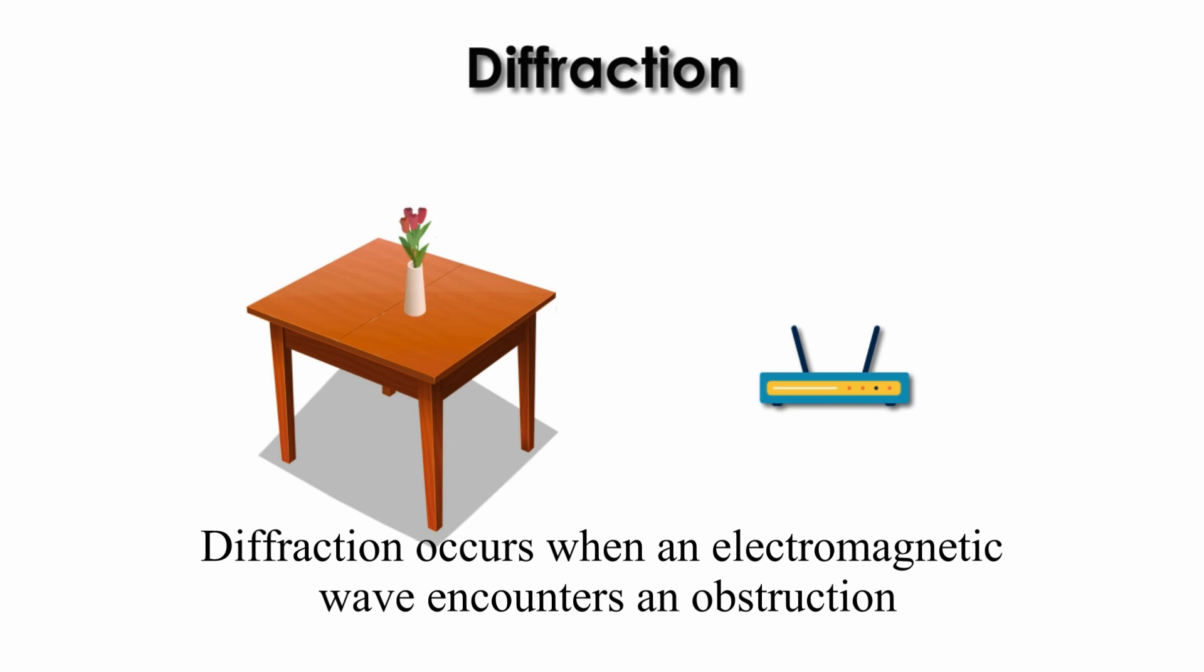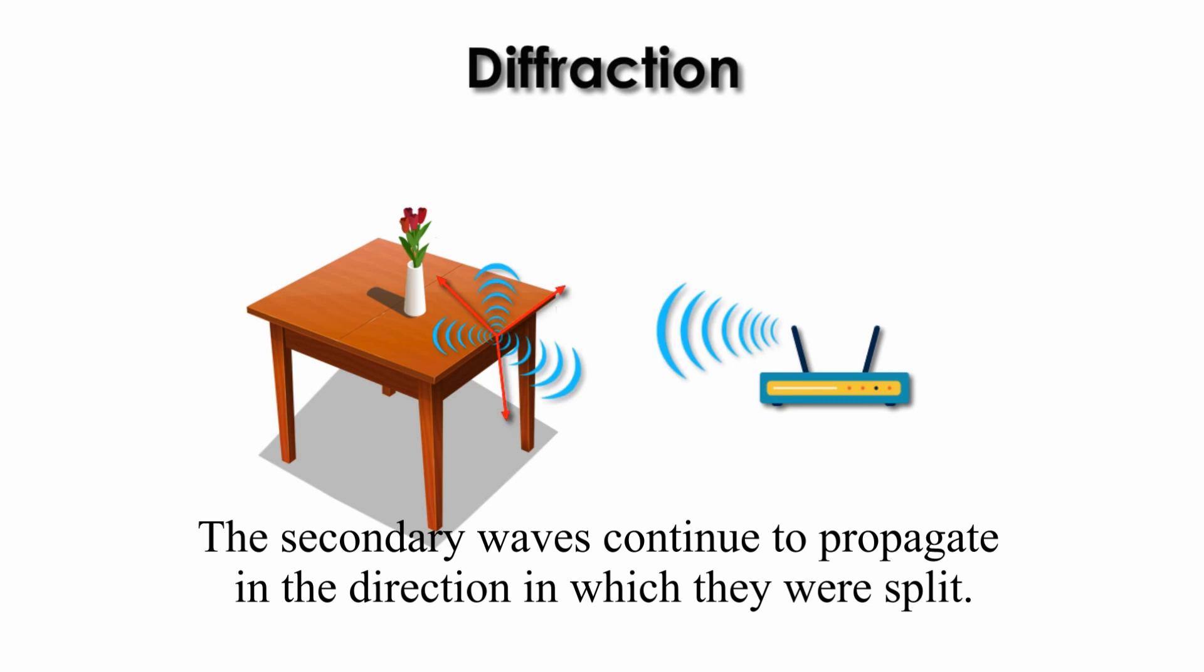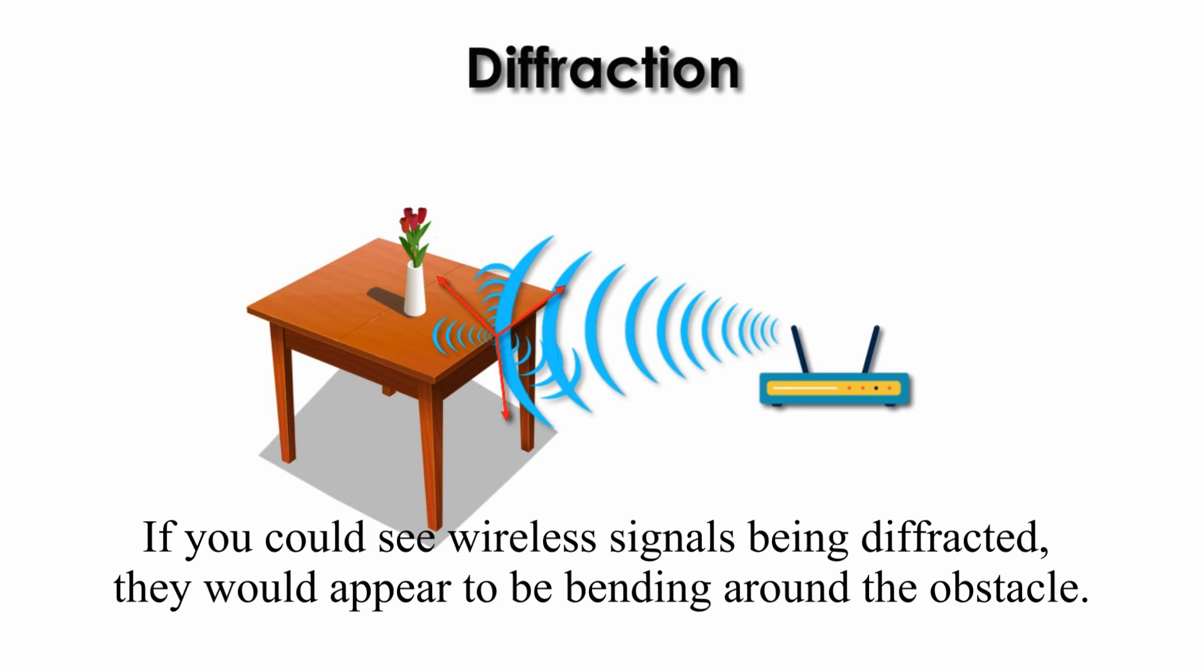Diffraction. Diffraction occurs when an electromagnetic wave encounters an obstruction and splits into secondary waves. The secondary waves continue to propagate in the direction in which they were split. If you could see wireless signals being diffracted, they could appear to be bending around the obstacle.